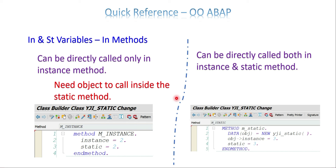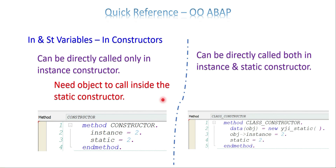The same restriction is applicable for constructors, since a constructor is a special method. In an instance constructor, you can call instance and static attributes directly. But in a static constructor, if you want to call an instance attribute, you need an object; static attributes can be called directly in both instance constructors and static constructors. These are the very basic things about instance and static variables and their properties.